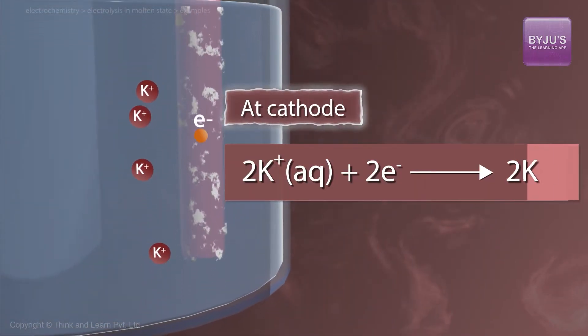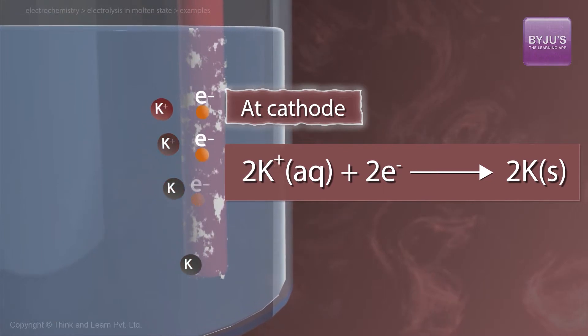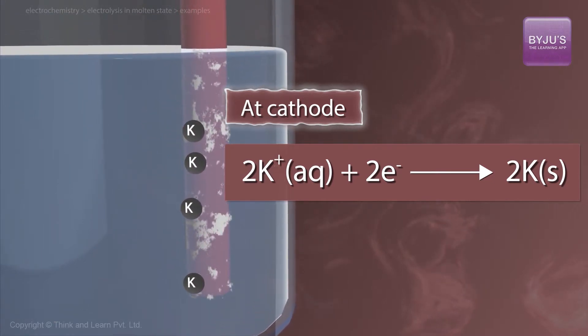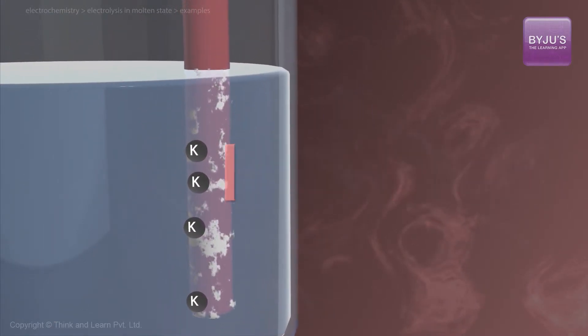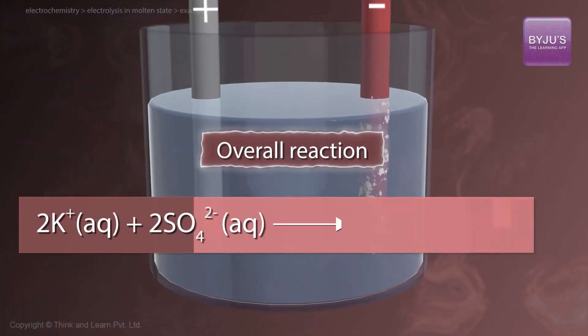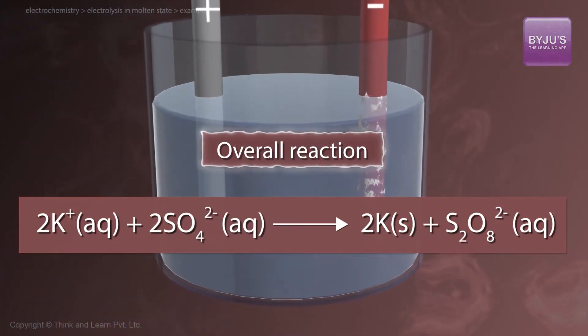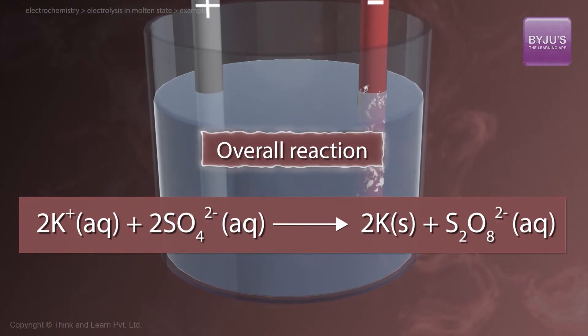At the cathode, 2K+ plus 2 electrons get converted into 2K, meaning potassium ions are getting reduced. Therefore, the overall reaction is 2K+ plus 2SO4 2- gives 2K plus S2O8 2-.